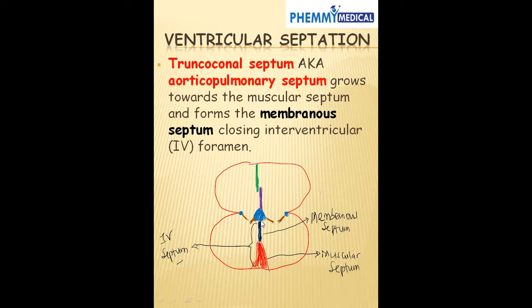The two important things needed to form the membranous septum are: number one, the endocardial cushion, and number two, the aorticoconal septum. The aorticoconal septum comes from the neural crest. So if there is a neural crest defect — a defect in neural crest migration — that can lead to a problem forming the aorticoconal septum, which can also lead to a problem forming the membranous septum.